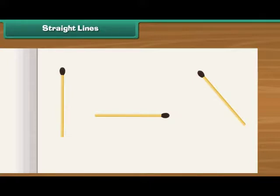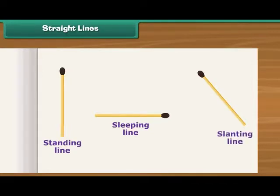Horizontal matchsticks make sleeping lines. Vertical matchsticks make standing lines. Slanting matchsticks make slanting lines.